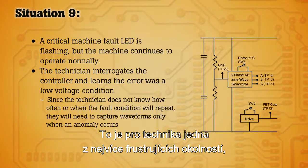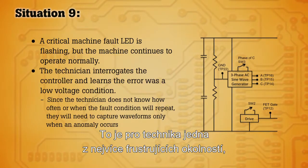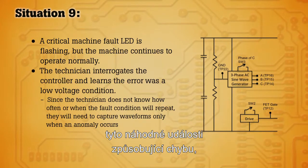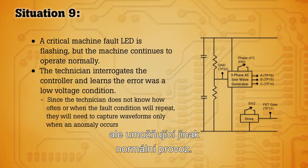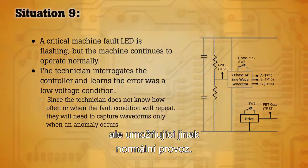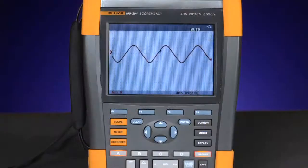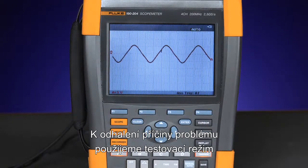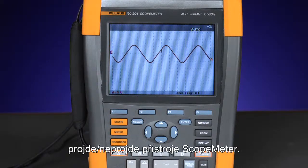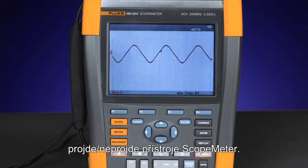This is one of the most frustrating circumstances for an engineer — these random events that cause an error but allow for otherwise normal operation. To get to the root of the problem, we're going to use the scope meter's pass-fail testing mode.